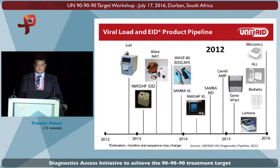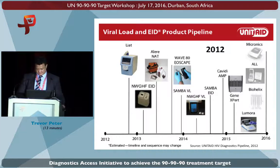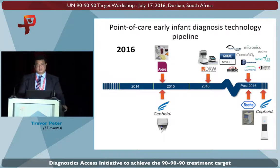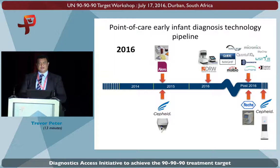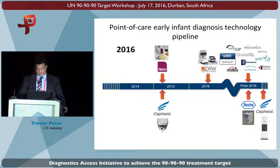This was demonstrated two years ago and again last year with the announcement of viral load pricing deals and early infant diagnosis pricing deals, achieved through a consortium effort — UNAIDS in the case of viral load, the Government of South Africa, the Global Fund, PEPFAR, and the Clinton Health Access Initiative — who came together to negotiate a deal for viral load testing. This deal has had some benefit, though it's still early days: $9 million saved, and it contributed to an extra 1.5 million tests conducted within 2015. We hope this deal has additional benefit over the coming years.